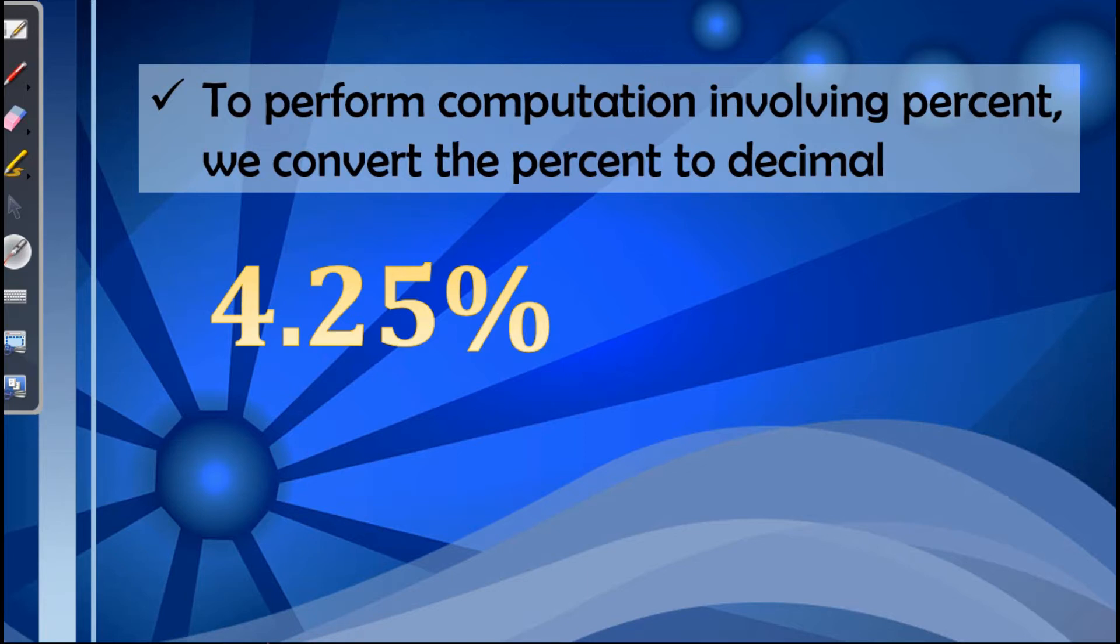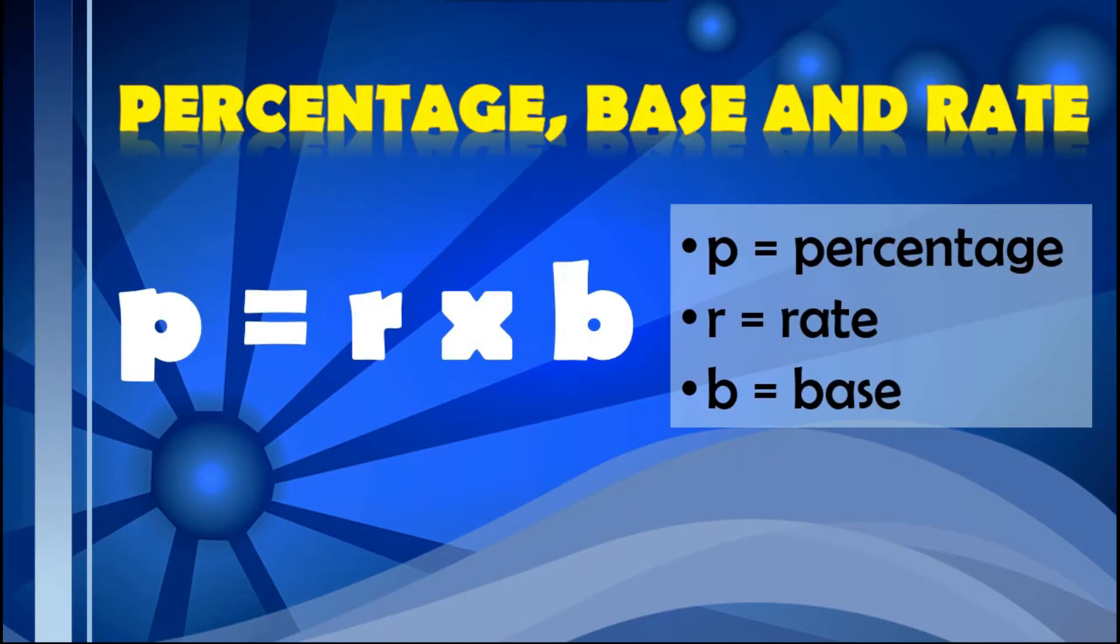In this example, we have 4.25%. So, we'll just simply remove the percent symbol and move the decimal point two places to the left. So, in this case, this will become 0.0425 or 425 ten-thousandths.